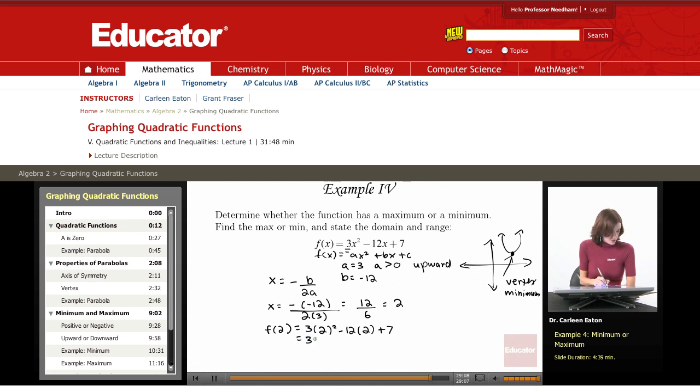So this is going to give me 3 times 4 minus 12 times 2 is 24 plus 7. So this is 12 minus 24 plus 7.